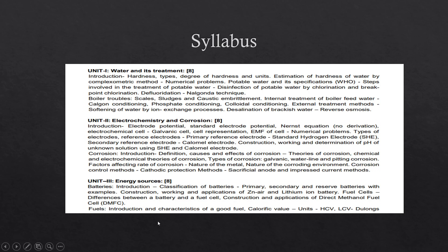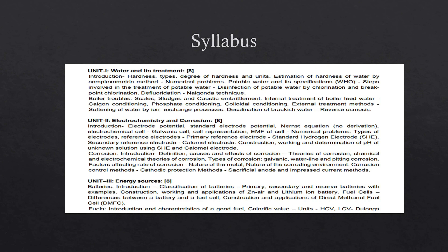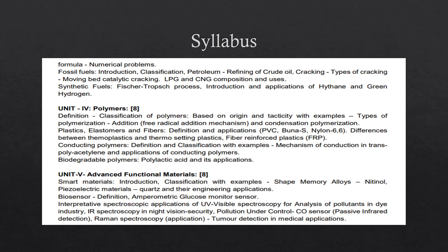Now coming to Engineering Chemistry R25, in the first segment we'll talk about the syllabus. Unit 1 is about water and its treatment. Unit 2 is electrochemistry and corrosion — one question from electrochemistry and one from corrosion is compulsory in the exam. Unit 3 is energy sources, covering batteries and fuel cells — one question from each. Also, numerical problems appear most likely only in unit 3.